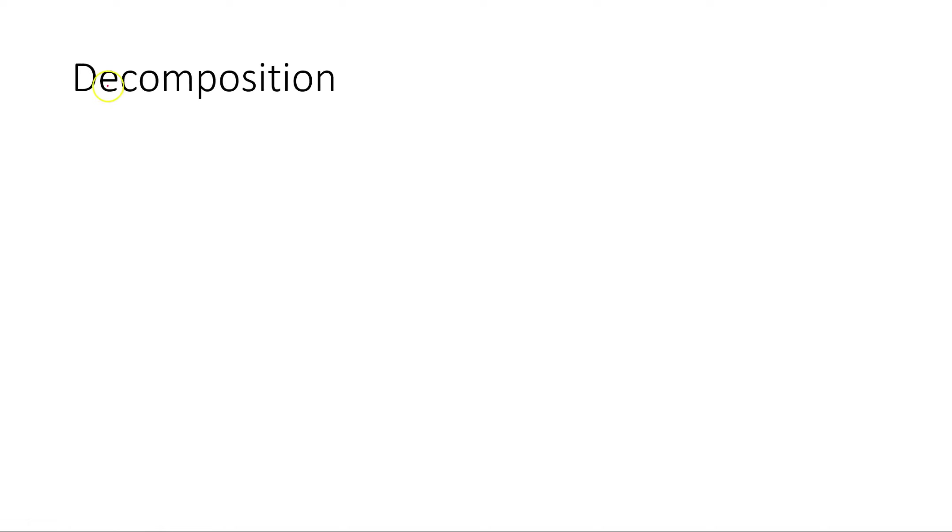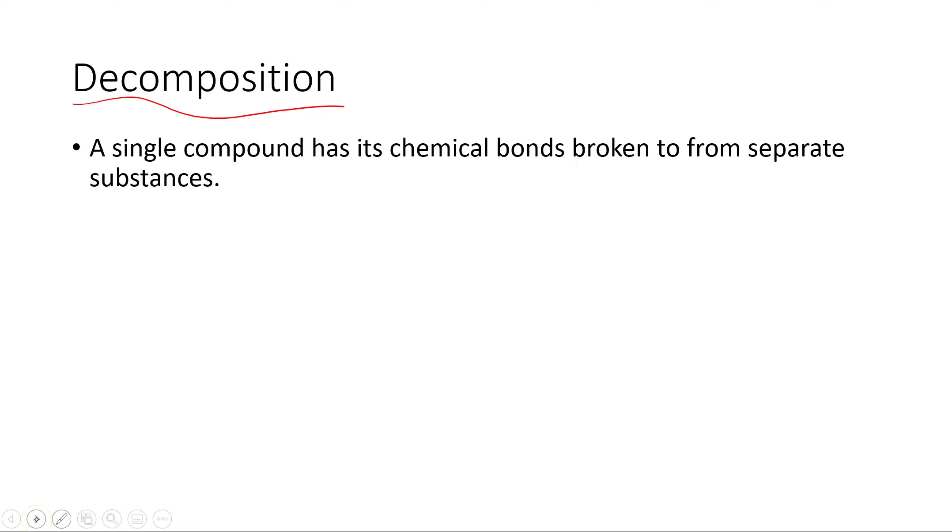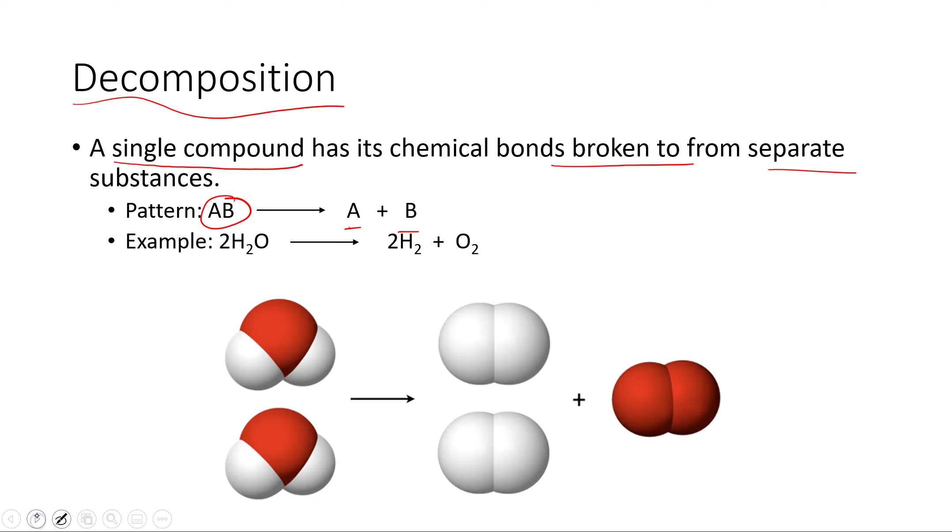The next type is decomposition, and we can think of decomposition as essentially the reverse of a combination or synthesis reaction. So a single compound has its bonds broken to form separate substances. The pattern here is we begin with a chemically bonded substance and we break that apart into individual substances.